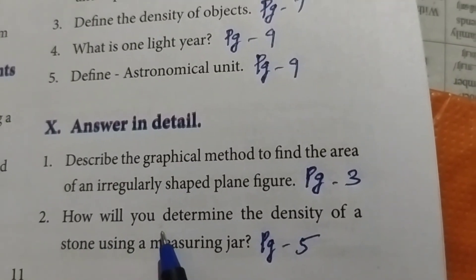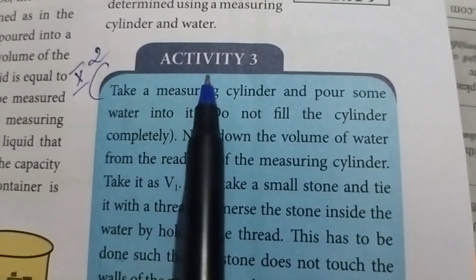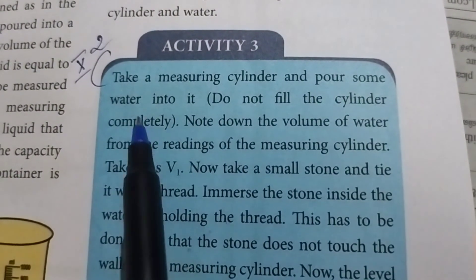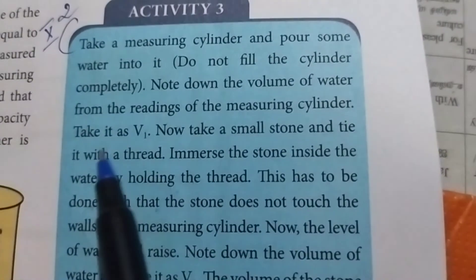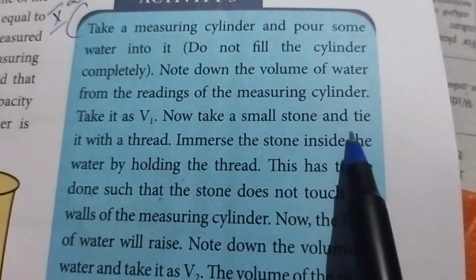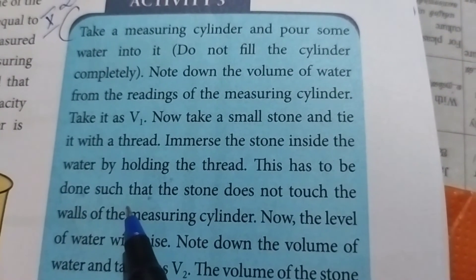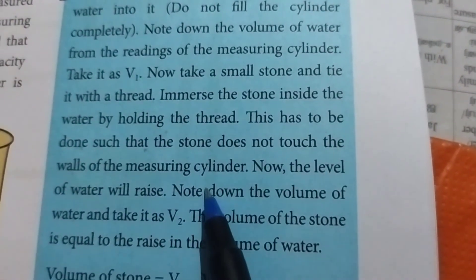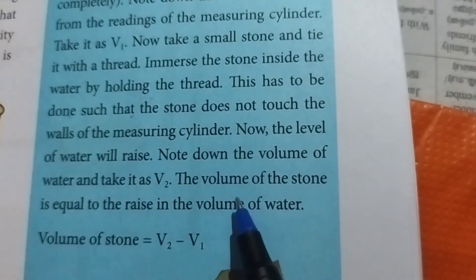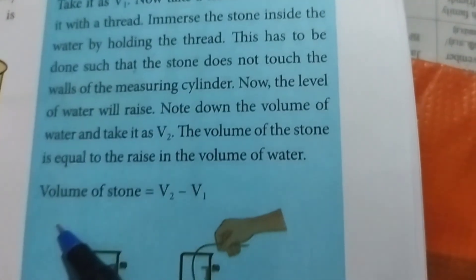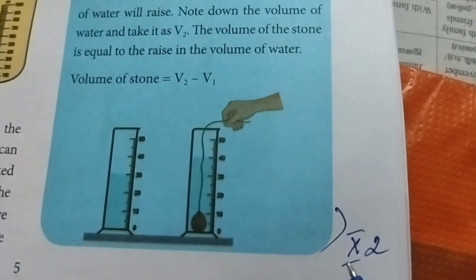Second question: How will you determine the density of a stone using a measuring jar? Take page number 5, Activity 3. Take a measuring cylinder and pour some water into it — do not fill the cylinder completely. Note down the volume of water from the reading of the measuring cylinder; take it as V1. Now take a small stone and tie it with a thread. Immerse the stone inside the water by holding the thread, such that the stone does not touch the walls of the measuring cylinder. The level of water will rise. Note down the new volume of water and take it as V2. The volume of the stone is equal to the rise in the volume of water: volume of stone = V2 − V1.